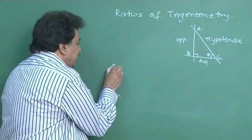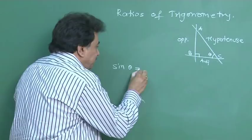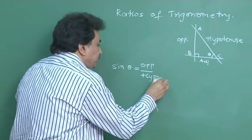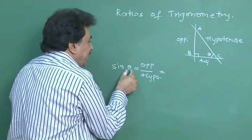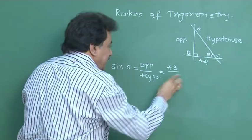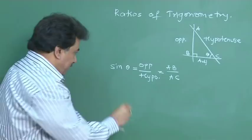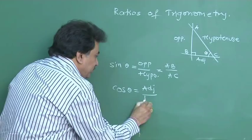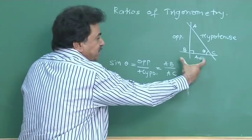First is sine theta — that is opposite upon hypotenuse. The opposite side from theta is AB and the hypotenuse is AC, so sine theta equals AB upon AC. Then cos theta — adjacent upon hypotenuse. From theta, the adjacent side is BC and hypotenuse is AC, so cos theta equals BC upon AC.